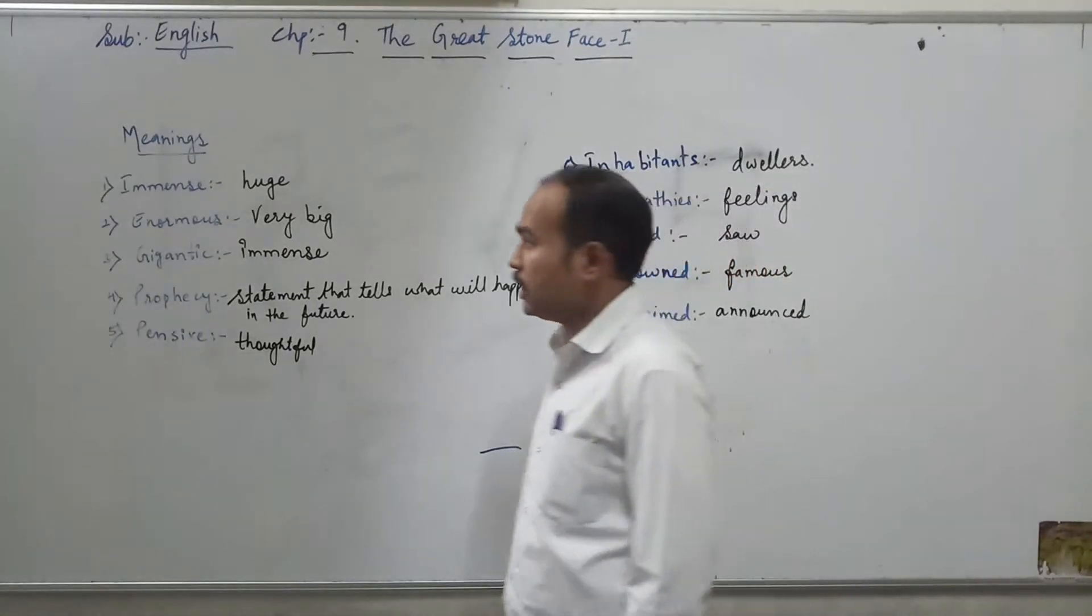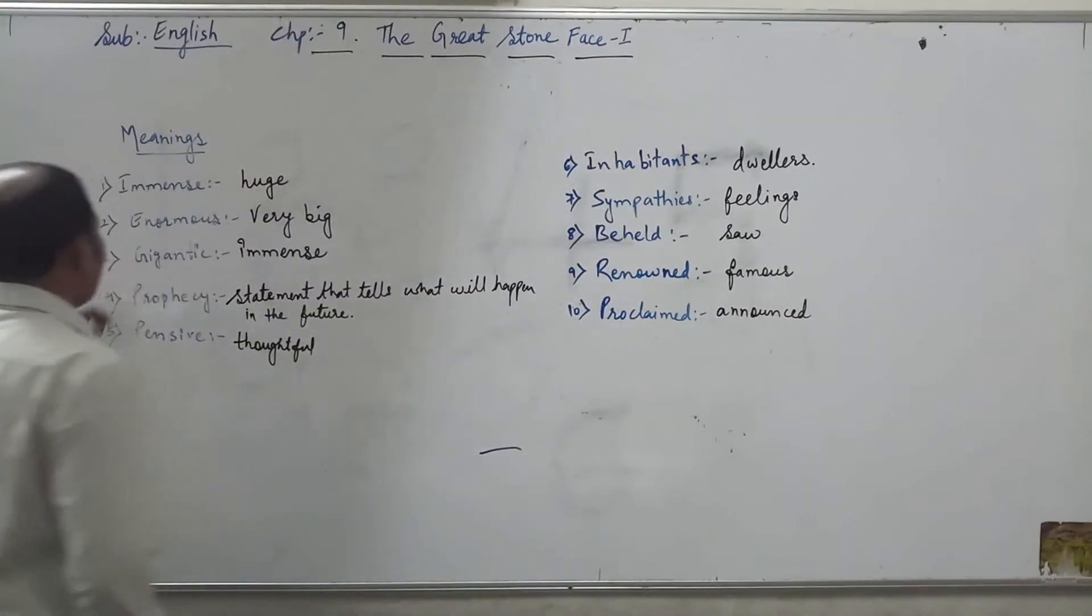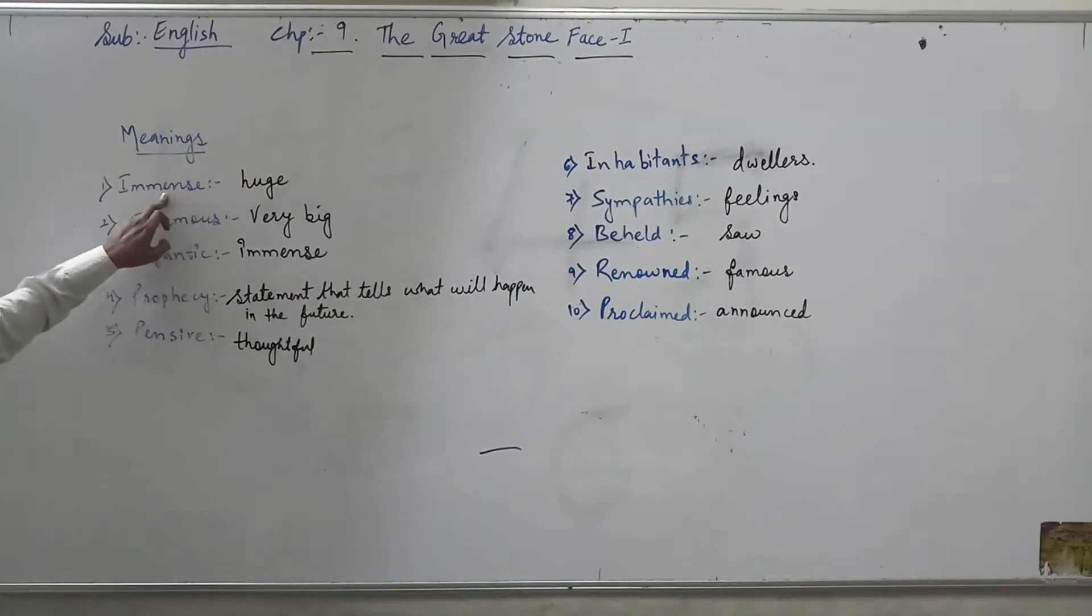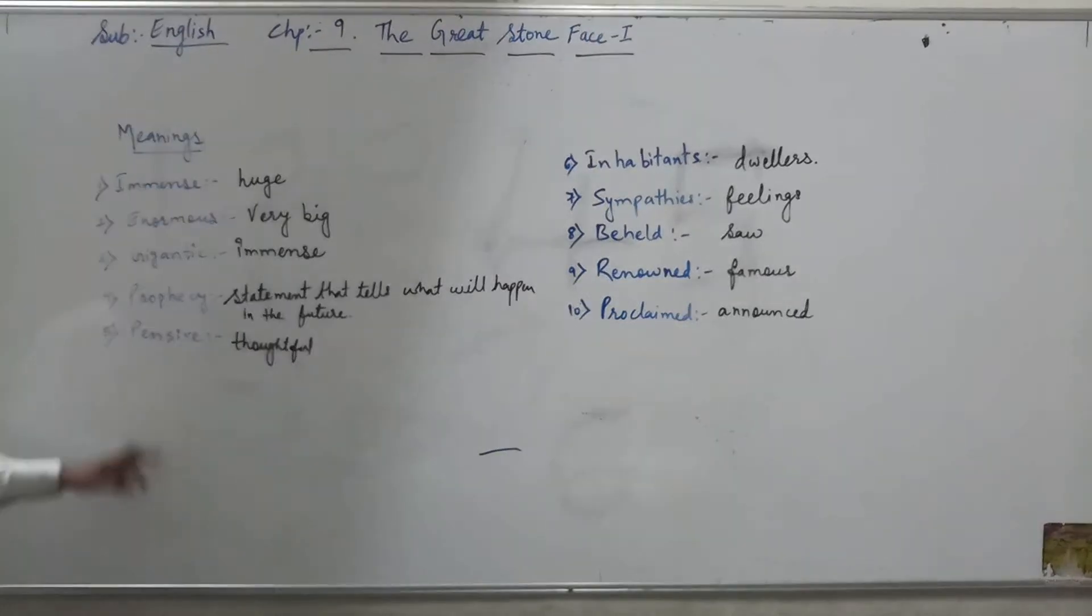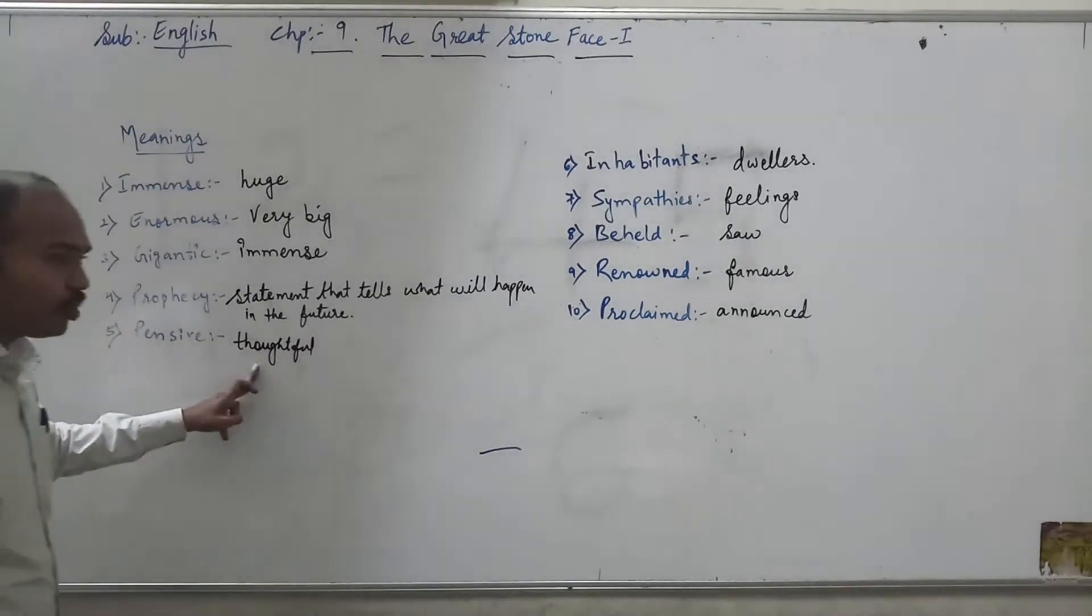First of all we will see the meaning of that. Number 1 is immense. Immense means huge. Number 2, enormous means very big. Gigantic means immense. Prophecy means statement that tells what will happen in the future.